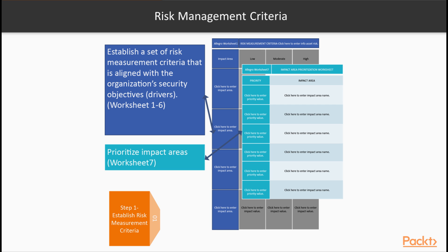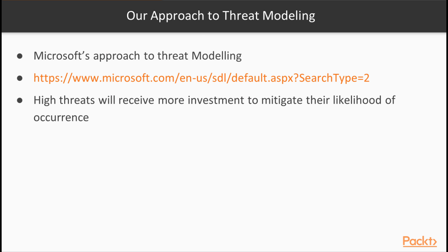One of the defined steps in the Octave Allegro process is the definition of risk management criteria up front. This allows you to specify exactly what security criteria will drive your threat analysis. For example, your system might require data integrity as a key security criteria, but confidentiality of transactions is low. We'll be using Microsoft's approach to threat modeling as we walk through our example threat model of a smart parking garage. This is documented as part of their Secure Development Lifecycle, and you can learn more about their SDL at the link provided.